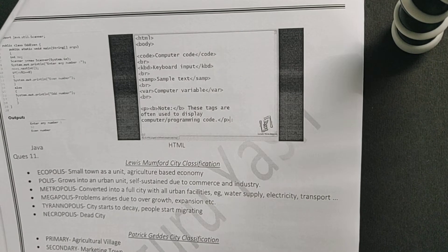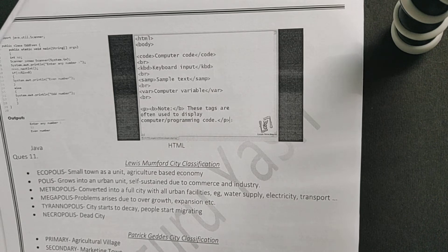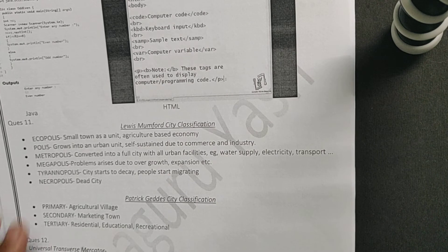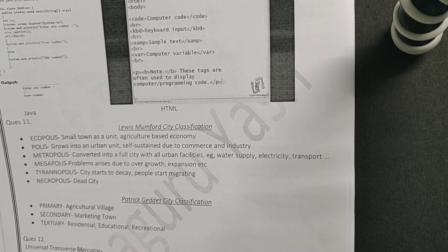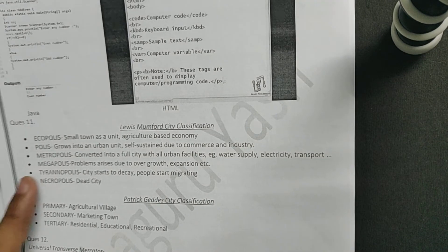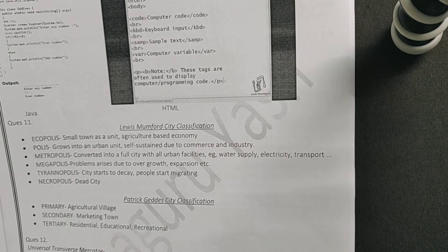The second stage is polis, where the rural area is getting converted into an urban area and instead of just the primary sector, you now have commerce and industry — the secondary and tertiary sectors coming in. The third stage is metropolis, where the village has totally converted into an urban area or city with all urban facilities like water supply, electricity, transport, education, etc. The fourth stage is megapolis, where a lot of people start commuting to the city, creating problems like growth, expansion, and overpopulation.